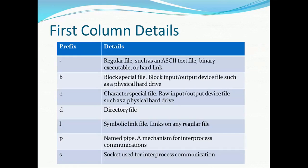There are some additional information also mentioned here. In the first column, as we said, there will be d, hyphen, or l. Along with that, there will be additional characters also available. So if the first column starts with a hyphen, it is nothing but a regular file such as ASCII text file, binary executable, or hard link. It's not soft link, it's a hard link. If it starts with a B, means if the first column and the first character start with B, it signifies a block special file. Block input or output device file such as a physical hard drive. If the first character is C, it is character special file with raw input or output device file such as physical hard drive. D stands for directory file, which we already know. L stands for symbolic link file, links on any regular file.